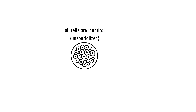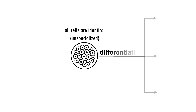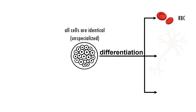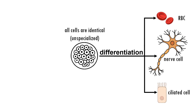Over time, they undergo a process called differentiation, where they develop into specialized cells such as red blood cells, nerve cells, or ciliated cells. Each type of specialized cell has a specific role in the body. To perform these roles effectively, they usually have distinct shapes and structures, as well as specific numbers and types of organelles.